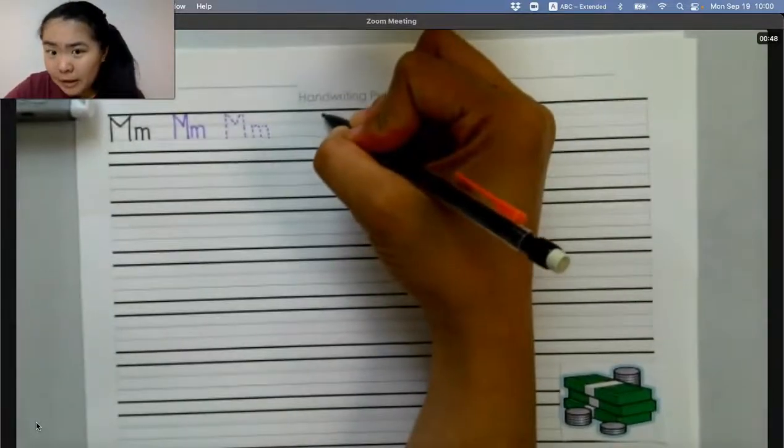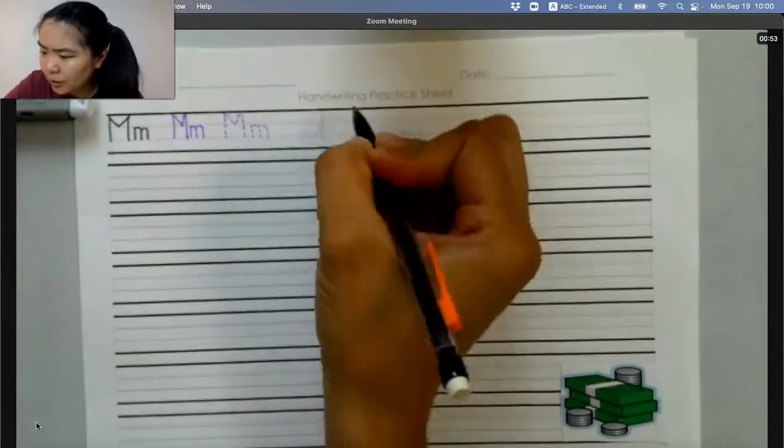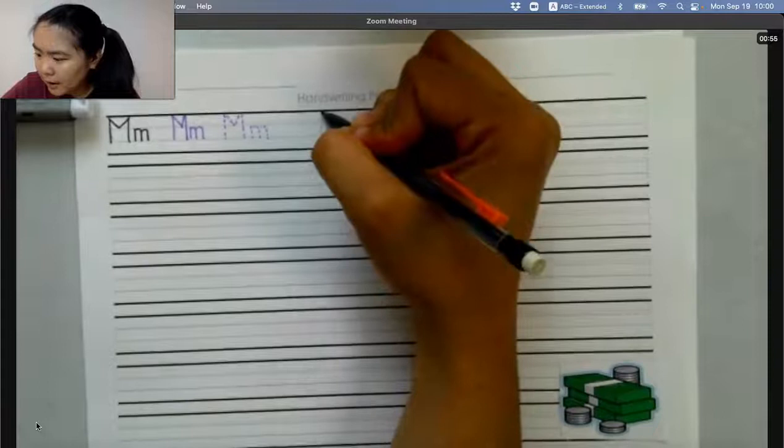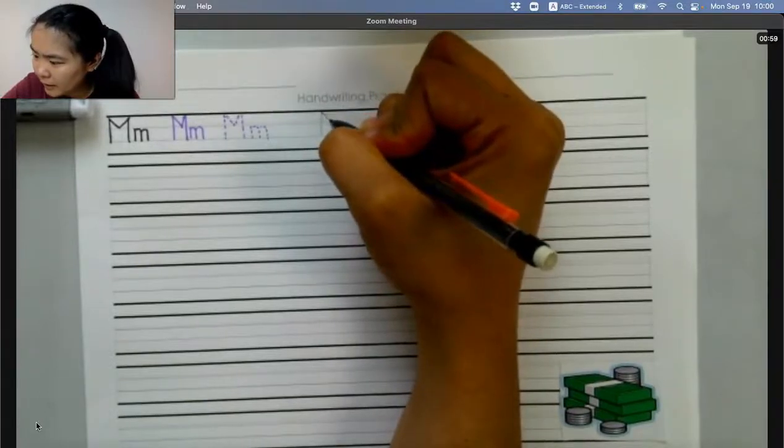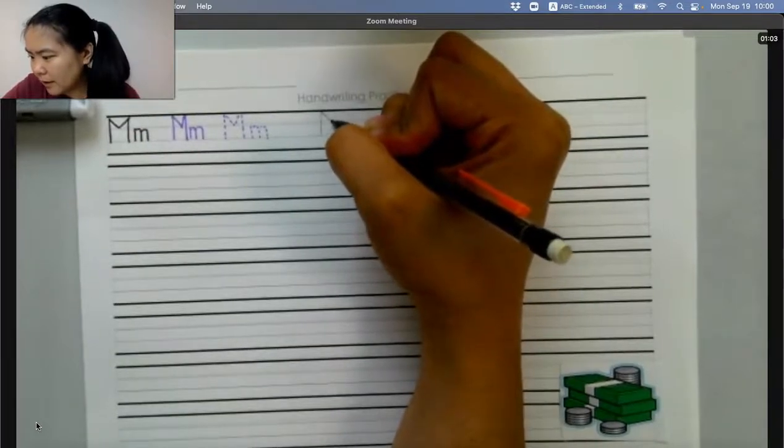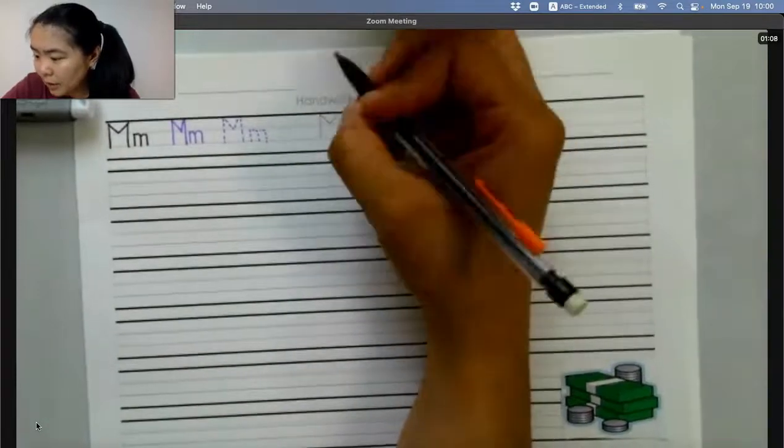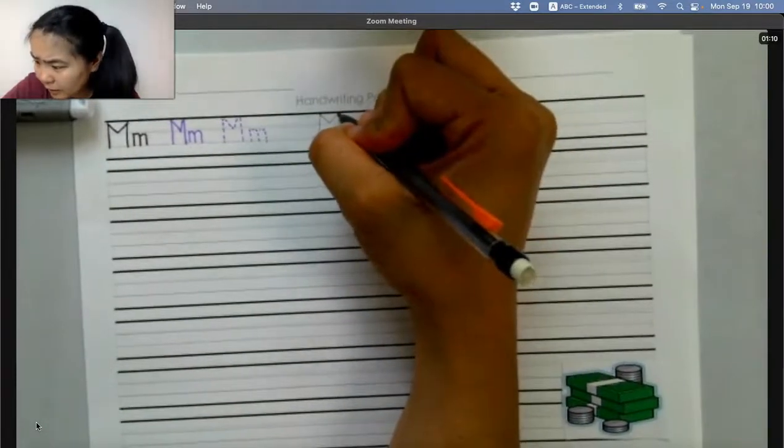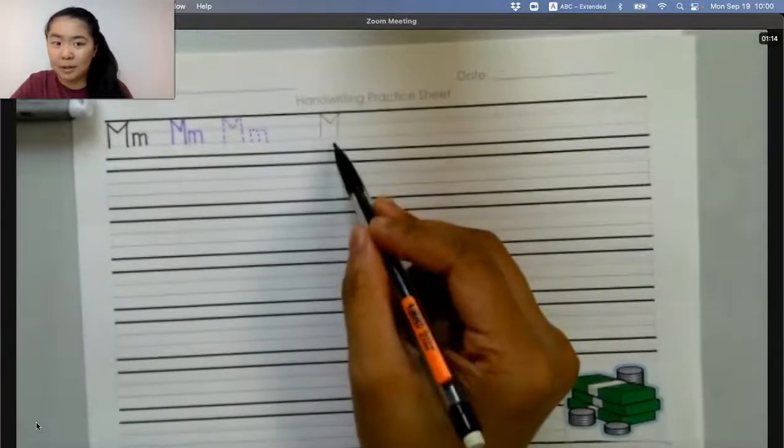So to write the letter M, we start at the top and go to the bottom, and then we take a small line and angle it to the middle, and then we do the same thing going the other direction. And then we take one more tall line. This is M. This is capital M.